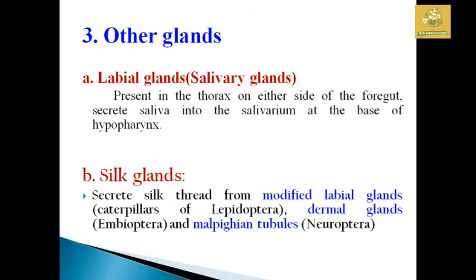Other glands include the labial gland, also known as the salivary gland, present in the thorax and either side of the forehead, which secretes saliva from the salivarium at the base of the hypopharynx for digestive purposes. The silk gland secretes a silk thread, modified from the labial glands in the caterpillars of Lepidoptera, as well as from dermal glands in Embioptera and Malpighian tubules in Neuroptera.